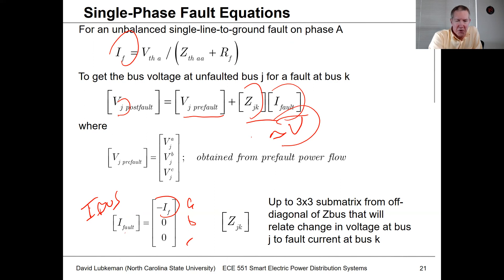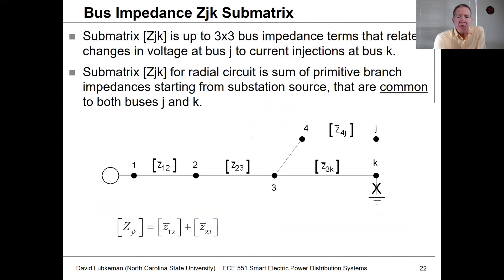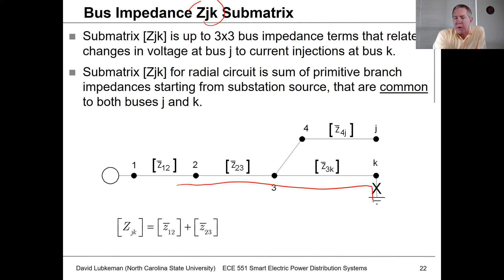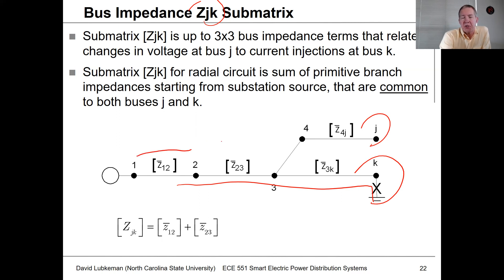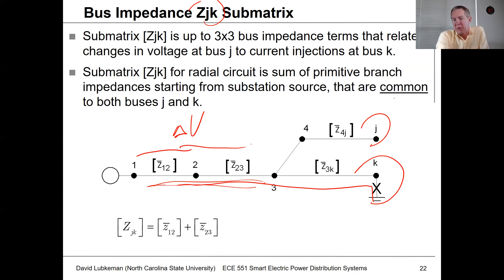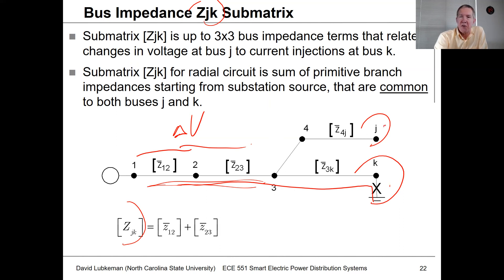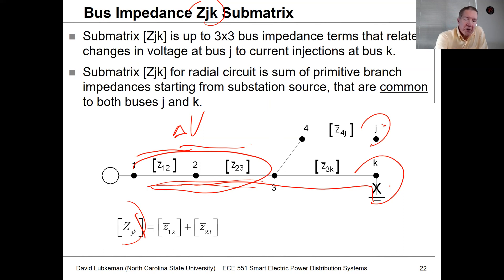We'll see this later in the examples with numbers as well. The value Z_JK is the impedance that's common to both buses. Suppose the fault is at bus K — how is that going to impact the voltage at bus J? It's going to impact the voltage due to the change in voltage occurring across these two sections, which in this case is Z_12 plus Z_23. One way you can get Z_JK is just through inspection: look at the fault bus K and the non-fault bus J, identify the sections of the circuit common to both, and simply sum those up.